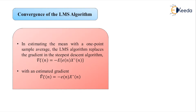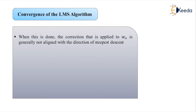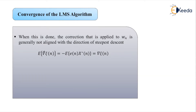When this is accomplished, the correction applied to W_n is generally not aligned with the direction of the steepest descent. However, since the gradient estimate is unbiased — the expected value of del-cap zeta(n) equals the true gradient del zeta(n) — the correction is on average in the direction of the steepest descent. We can now consider convergence of the LMS adaptive filter for a stationary process.